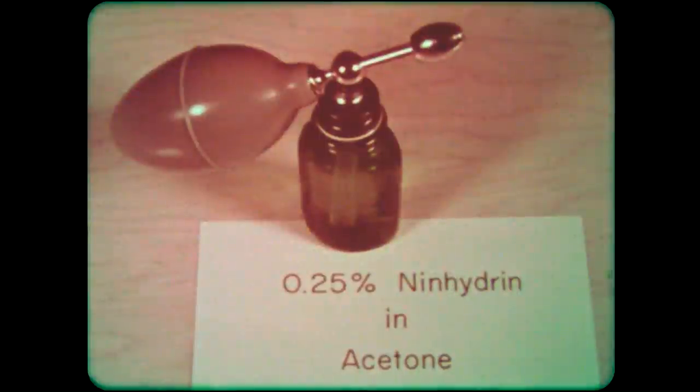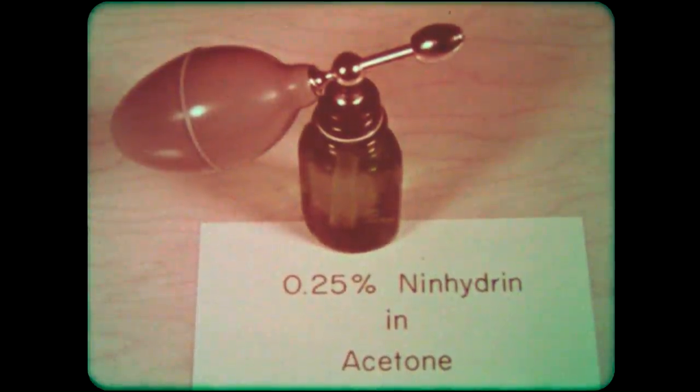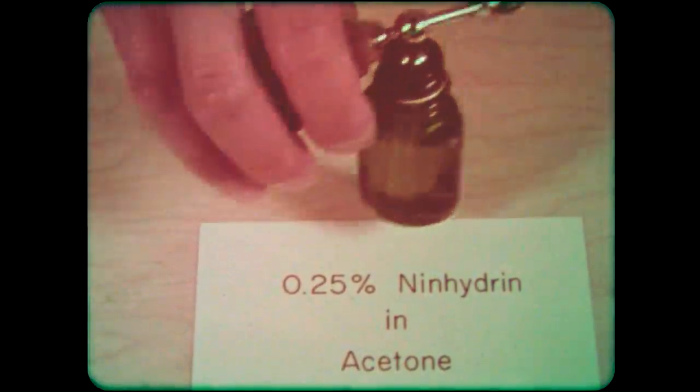The amino acids are colorless and must therefore be sprayed with an indicator such as a quarter percent solution of ninhydrin in acetone in order to bring out the color.